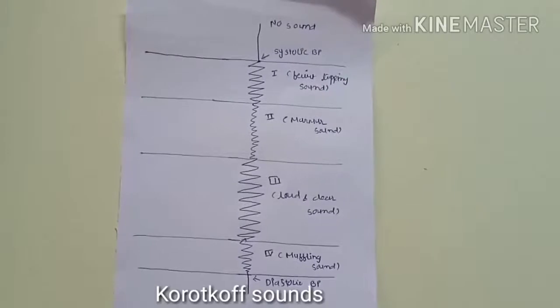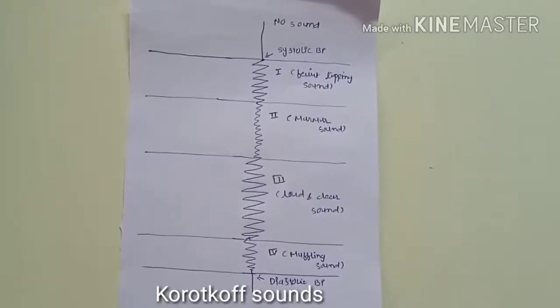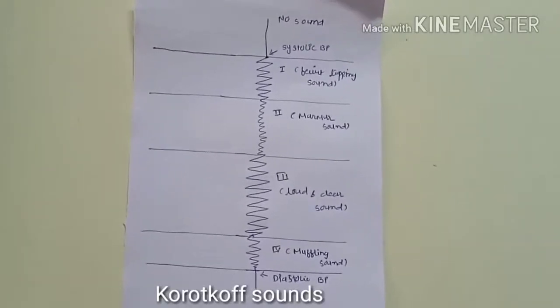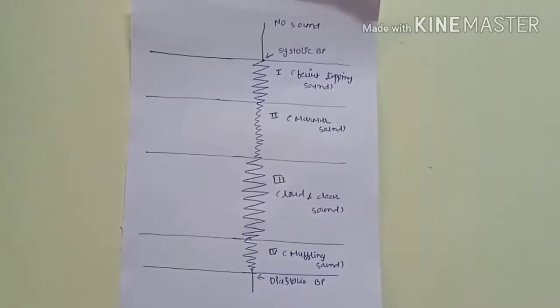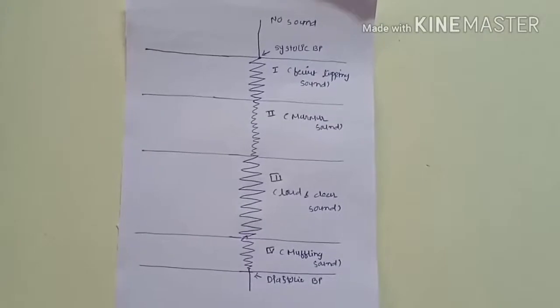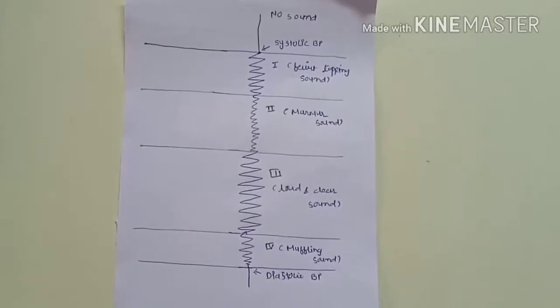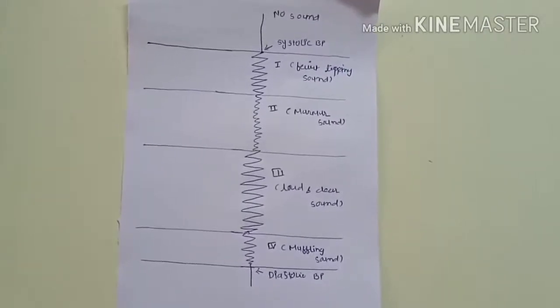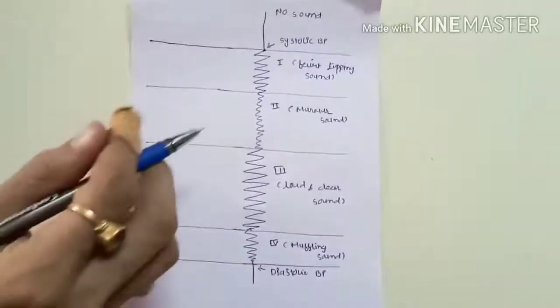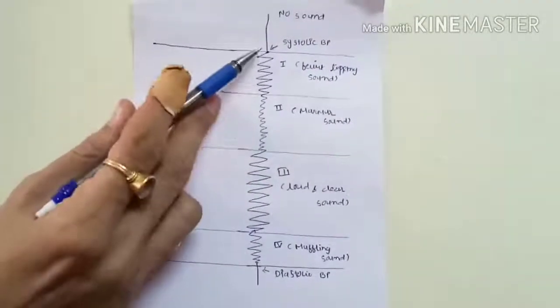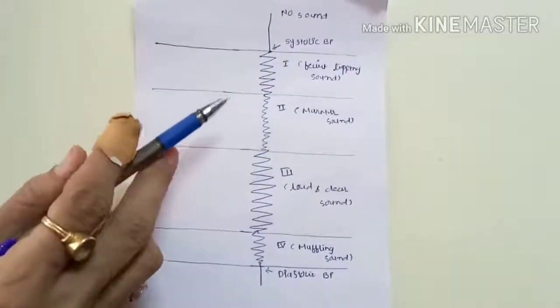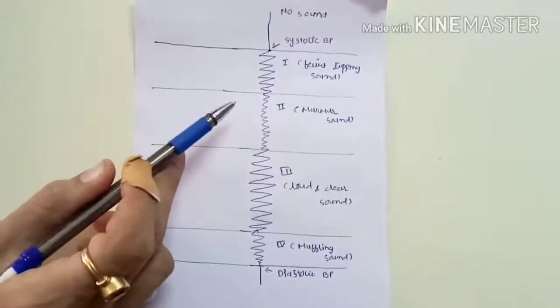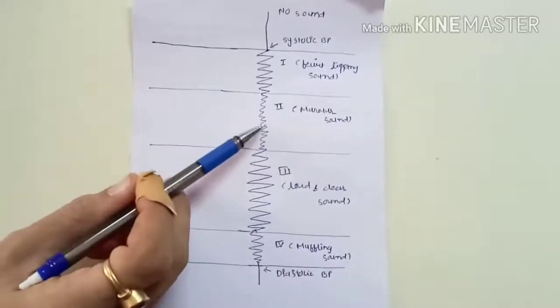Korotkoff sounds: When the pressure in the cuff is progressively lowered, the sounds undergo a series of changes in quality and intensity. They are heard in four different phases. These sounds are known as Korotkoff sounds. Appearance of faint tapping sound is recorded as systolic blood pressure. As you lower down the mercury column gradually, the sound becomes murmurish.